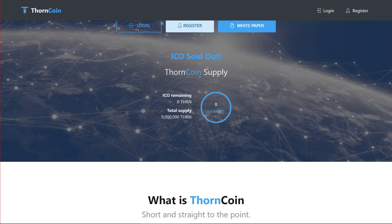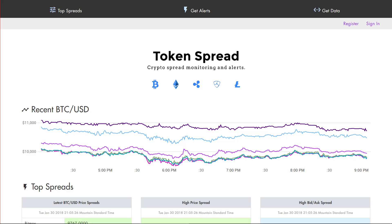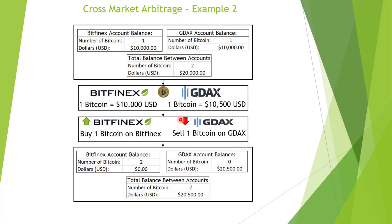What's another problem? Exchange fees and withdrawal fees. If I'm trying to realize my $20,500 and I'm ready to pull out, there's another fee I have to pay. So I paid a fee when I bought, I paid a fee when I sold, and when I'm trying to pull money out I pay another fee. These fees add up. If I don't account for those, my profit margin between this price difference that I was trying to take advantage of evaporates and might even go negative.